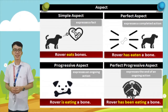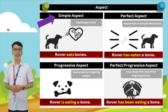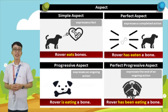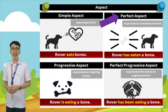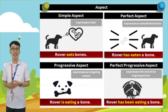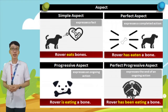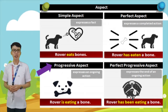Let's start with simple aspect. Simple aspect expresses a fact. For example, 'Rover eats bones.' 'Eats' is in simple aspect form. Next is perfect aspect. Perfect aspect expresses a completed action. For example, 'Rover has eaten a bone.' 'Has eaten' is in perfect aspect form. For example, 'Rover has been eating a bone.'